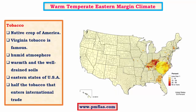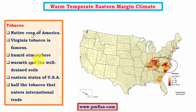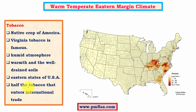Tobacco is a native crop of America, first cultivated in the American region before spreading to various other parts of the world. In India, Andhra Pradesh and surrounding regions have good tobacco cultivation. Virginia tobacco is very famous. It requires warm and well-drained soils, which are available in the eastern parts of USA. The maritime influence is high due to onshore winds, providing good rainfall. USA produces more than half of the world's tobacco production, most of which is exported to the international market.